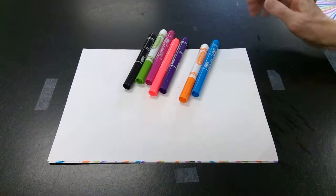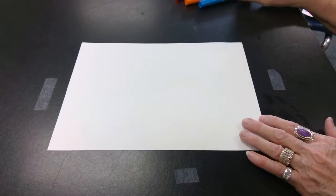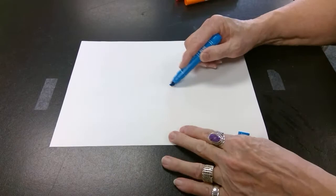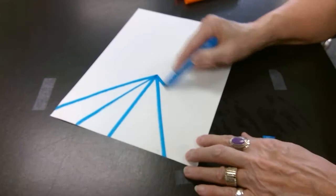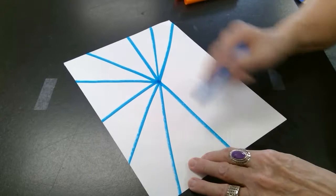So the first step I'm going to do is take one of my bright markers, and I'm just going to pick a spot that I want my focal point to be. I'm going to draw straight lines out to the edge of my paper and keep spinning my paper and turning it so that I can get blue lines all around in a circle.